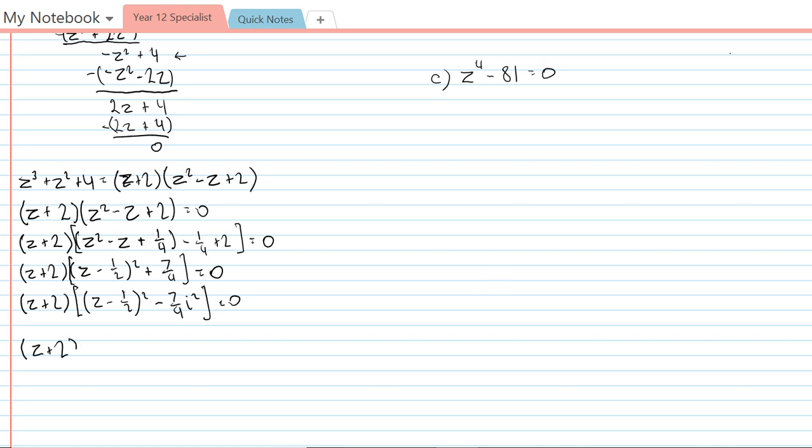To give z + 2, and then (z - 1/2 + √7/2 i) and (z - 1/2 - √7/2 i). Again that is all equal to zero.